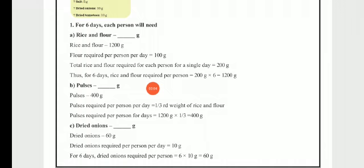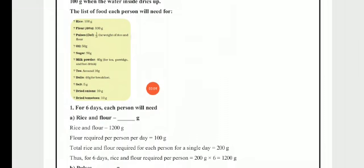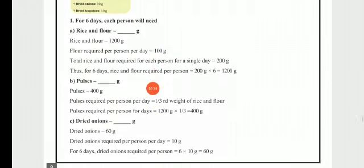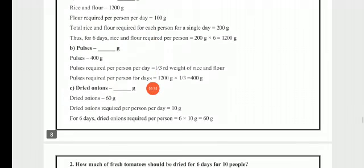Next, we have to find the quantity of pulses. The list says pulses are 1 third the weight of rice and flour. Since rice and flour total 1200 grams for 6 days, 1 third of 1200 grams gives us 400 grams of pulses.